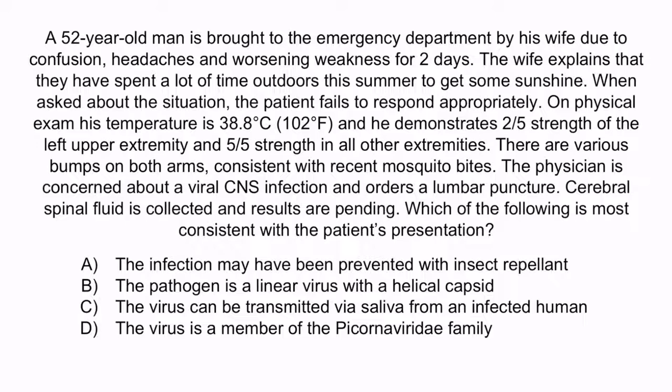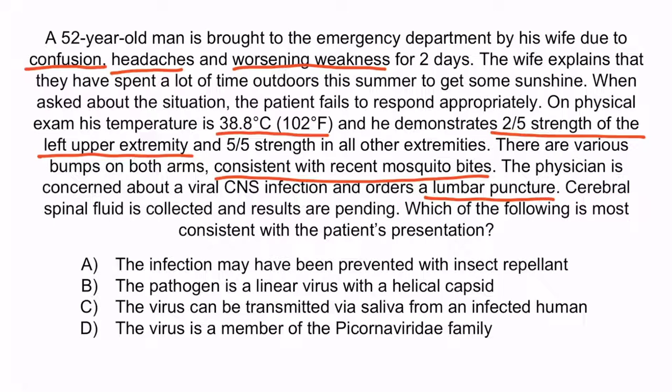From the question stem, the patient has symptoms of encephalitis — confusion, headaches, and weakness. The weakness is asymmetric, with only the left upper extremity demonstrating decreased 2 out of 5 strength. He also has a mild fever and evidence of mosquito bites. The physician appropriately orders a lumbar puncture to investigate encephalitis. Putting all these details together, we are led to believe that a mosquito transmitted a viral encephalitis. With that in mind, the correct answer is A — the infection may have been prevented with insect repellent. Recall the man spraying DEET to repel the mosquitoes.